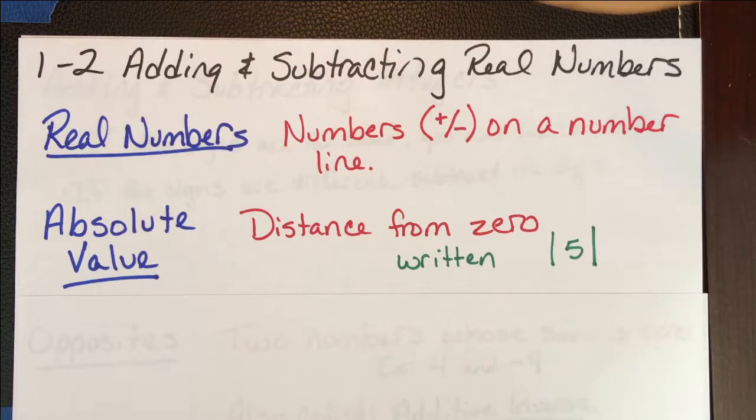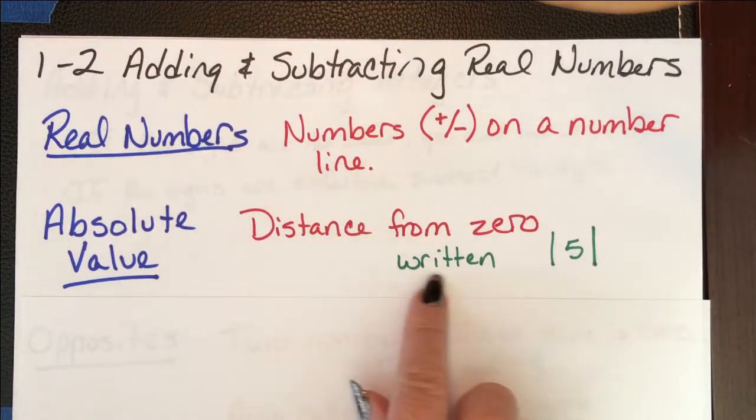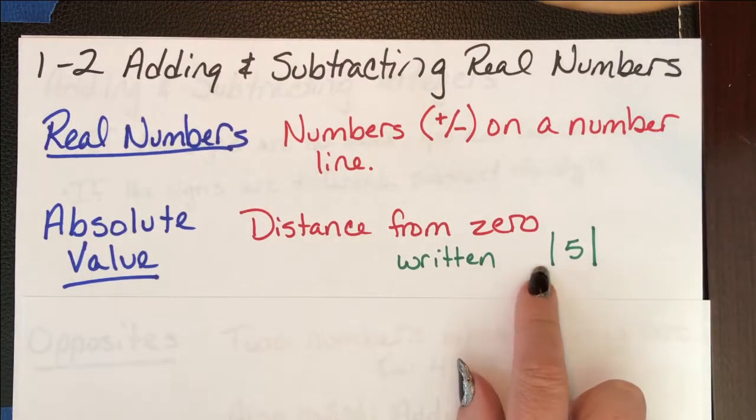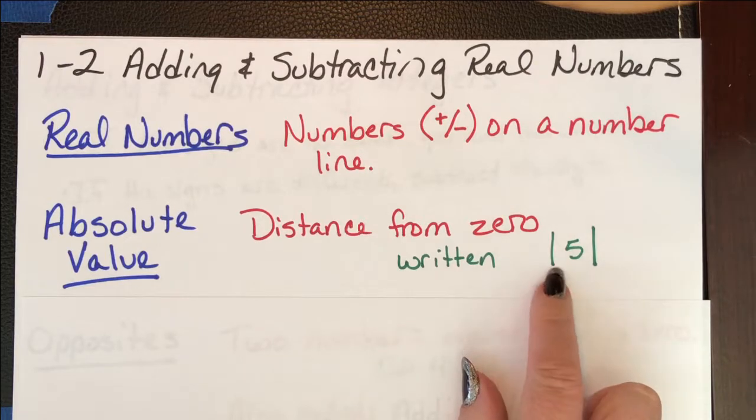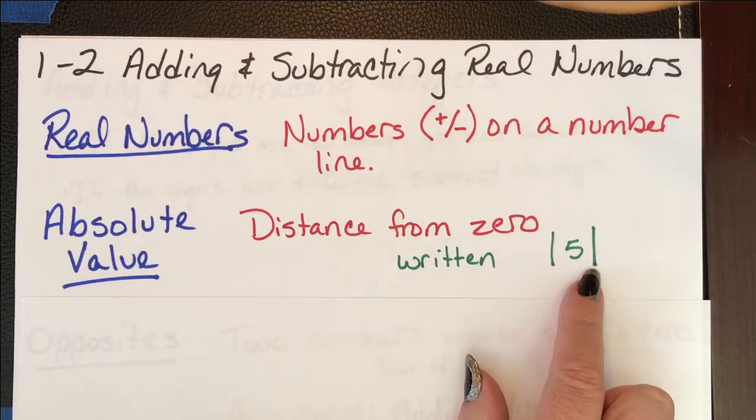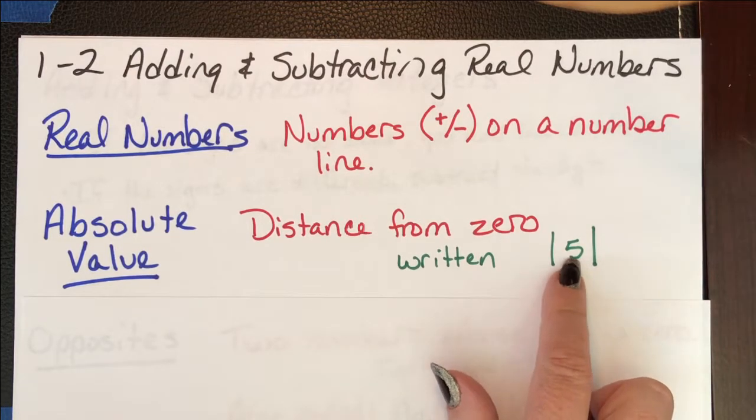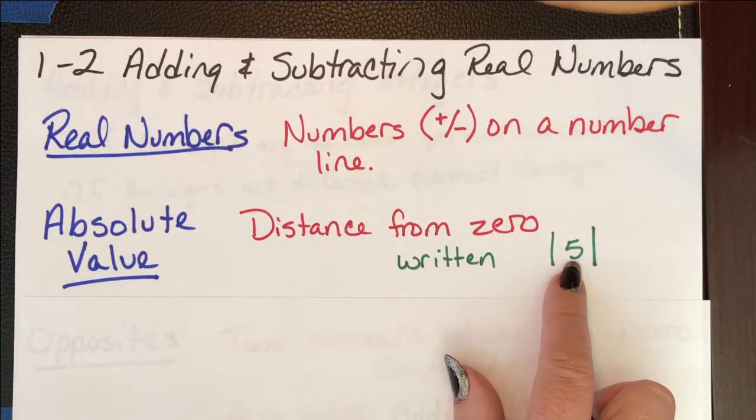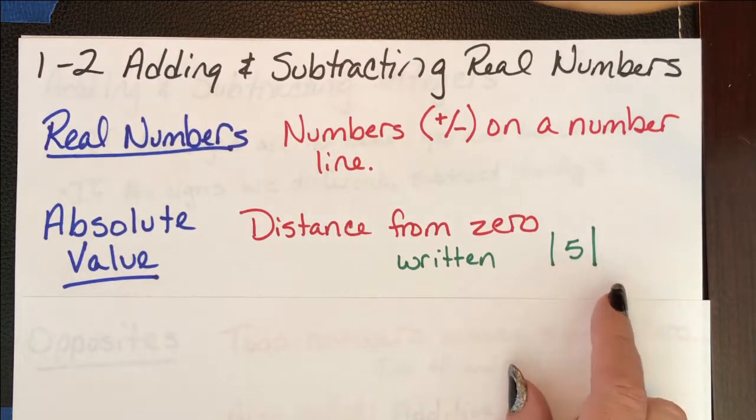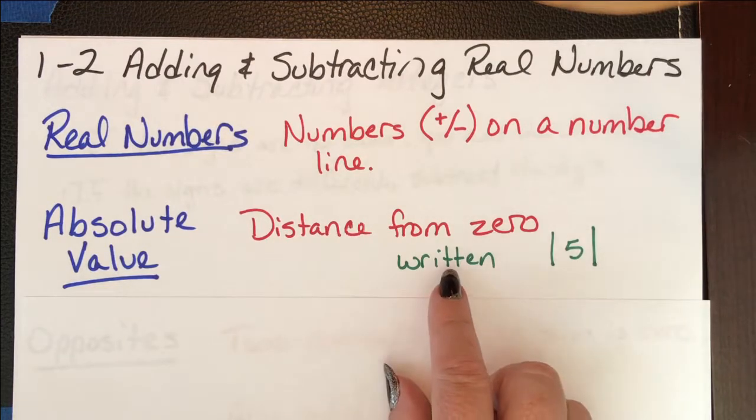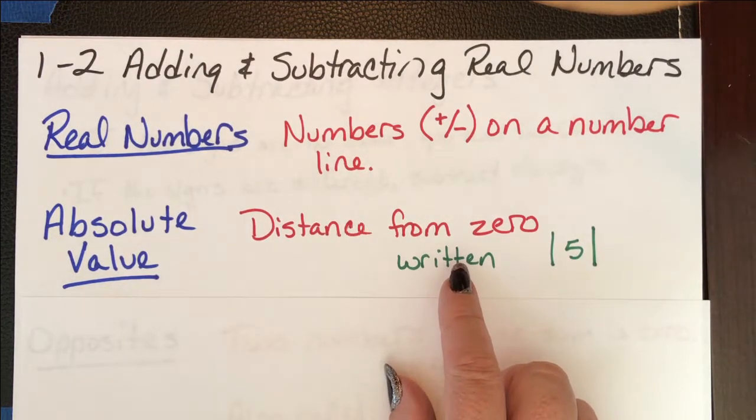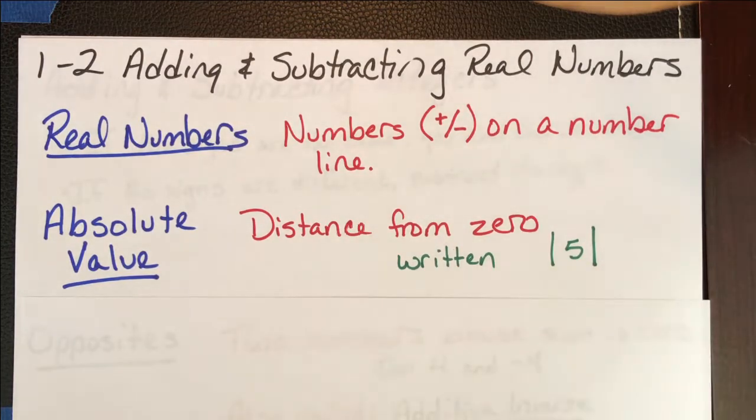We have absolute value. That is the distance from zero, and it's written the absolute value of five, where this is not 151. These lines are longer than taller. They go above and below the line for that five, so it's easily distinguishable from 151. Absolute value is when the absolute value of five is five, and the absolute value of negative five is five. You did a whole page of those, and you wondered why you had to do them because they were stupid. You don't have to do them anymore.